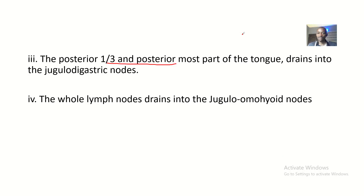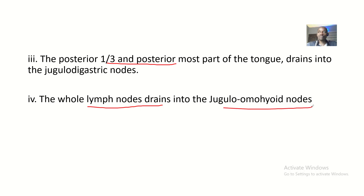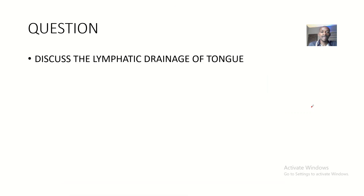All the lymph nodes of the tongue ultimately drain into the jugulo-omohyoid nodes. So the whole lymphatic drainage of the tongue ends up in the jugulo-omohyoid nodes.